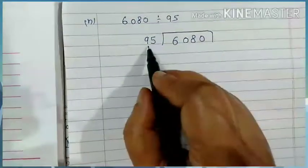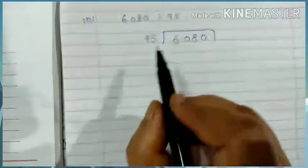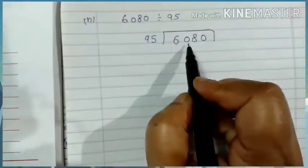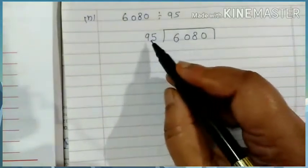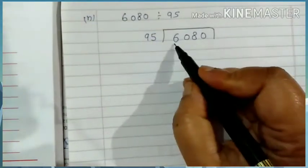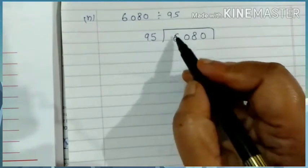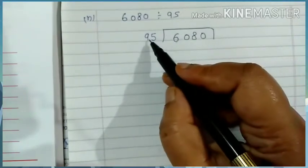Now this is 2 digit number. Here we are also taking 2 digit number. Now this 2 digit number is 60. This 2 digit number is 95. Children, see 60 is less than 95. So what do you do? You will take 3 digit number.